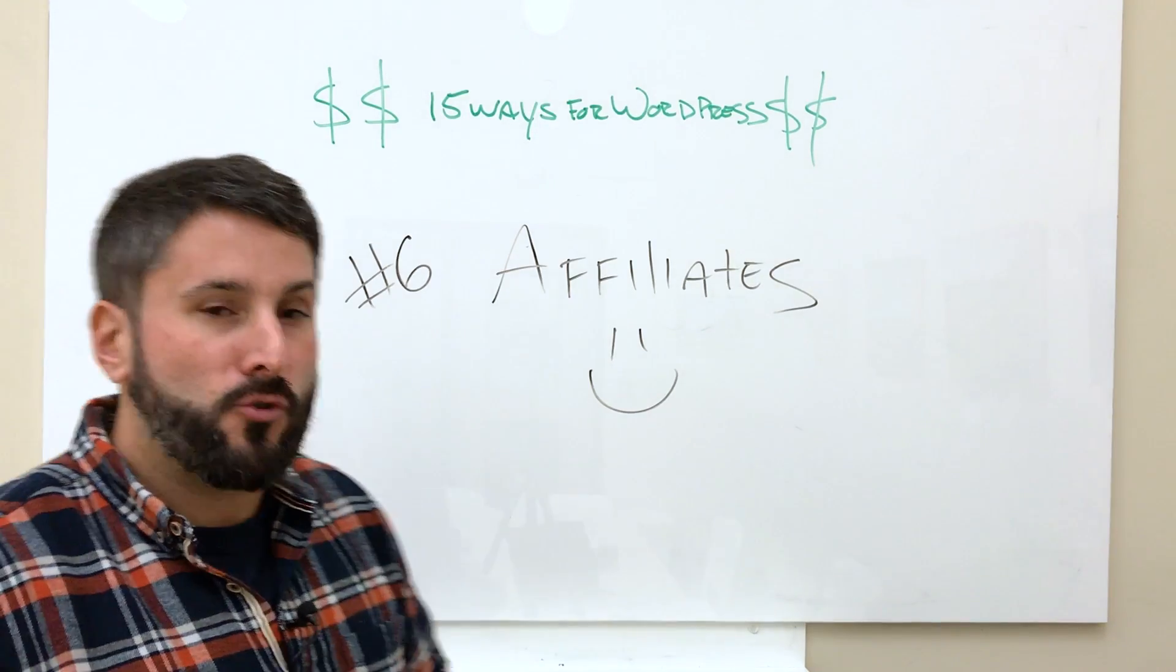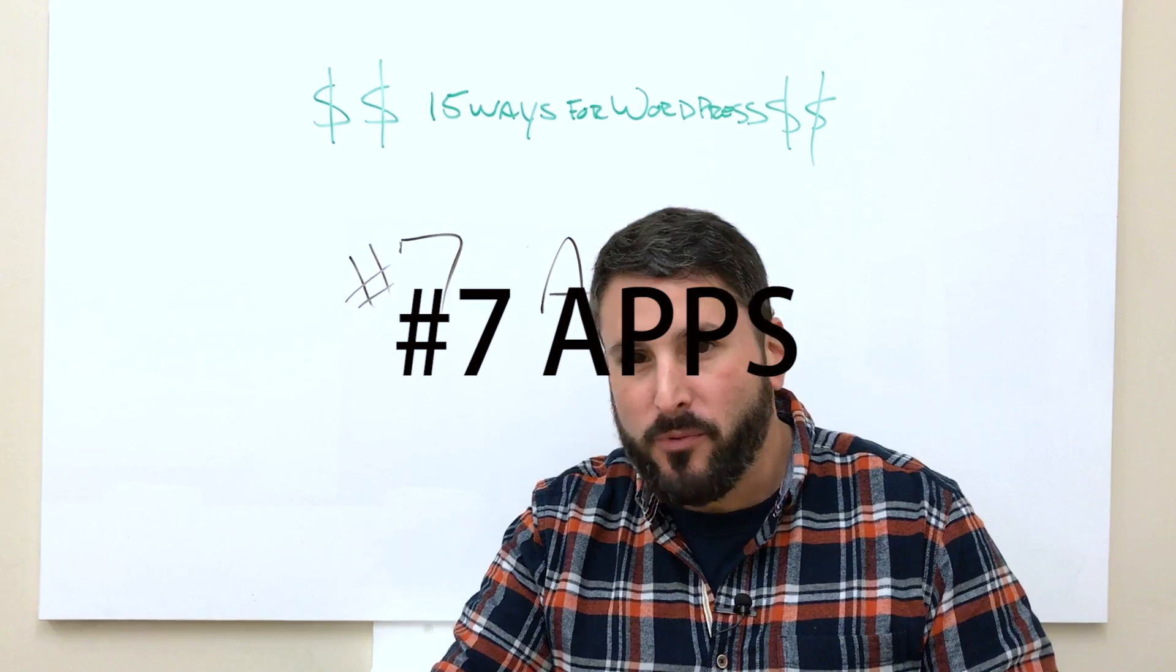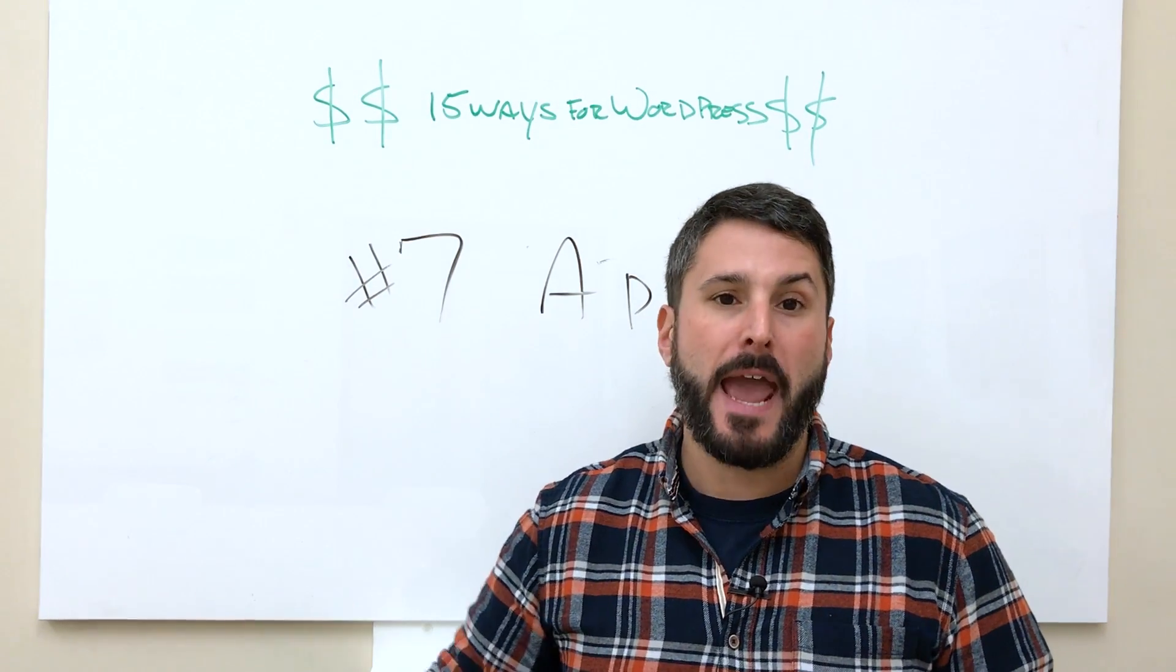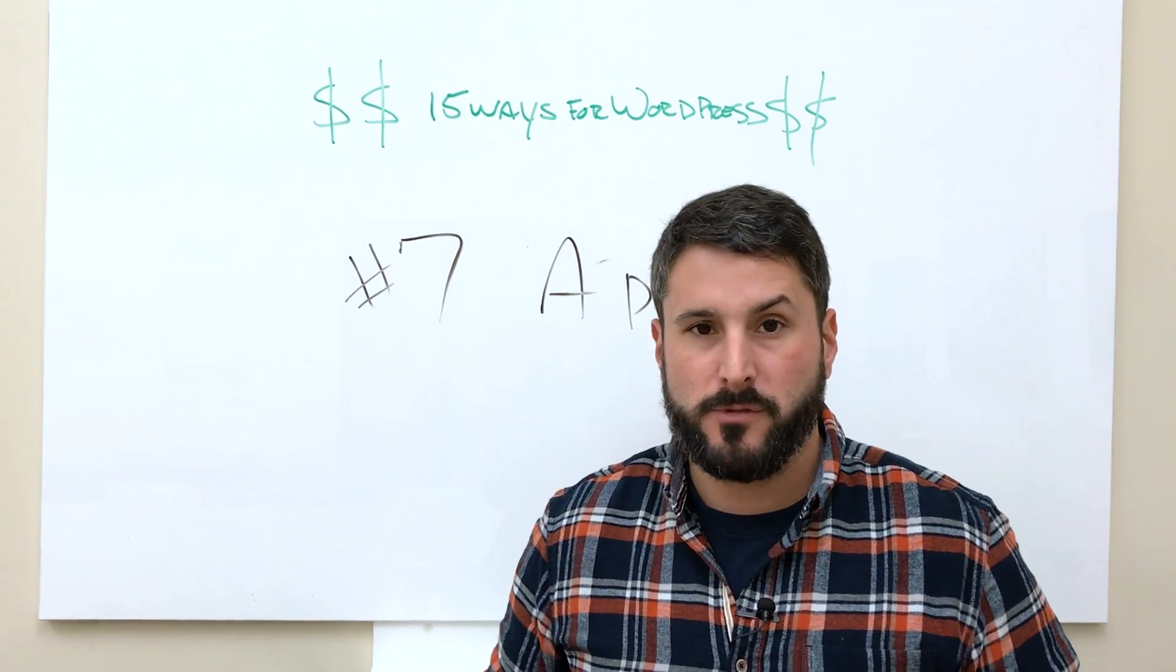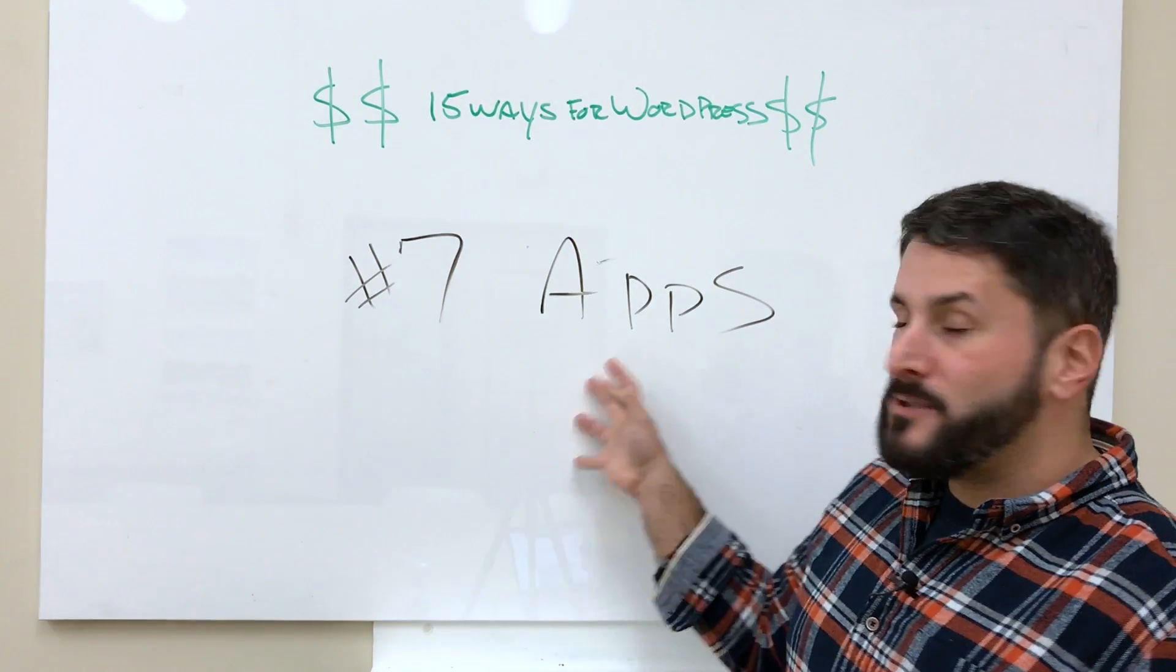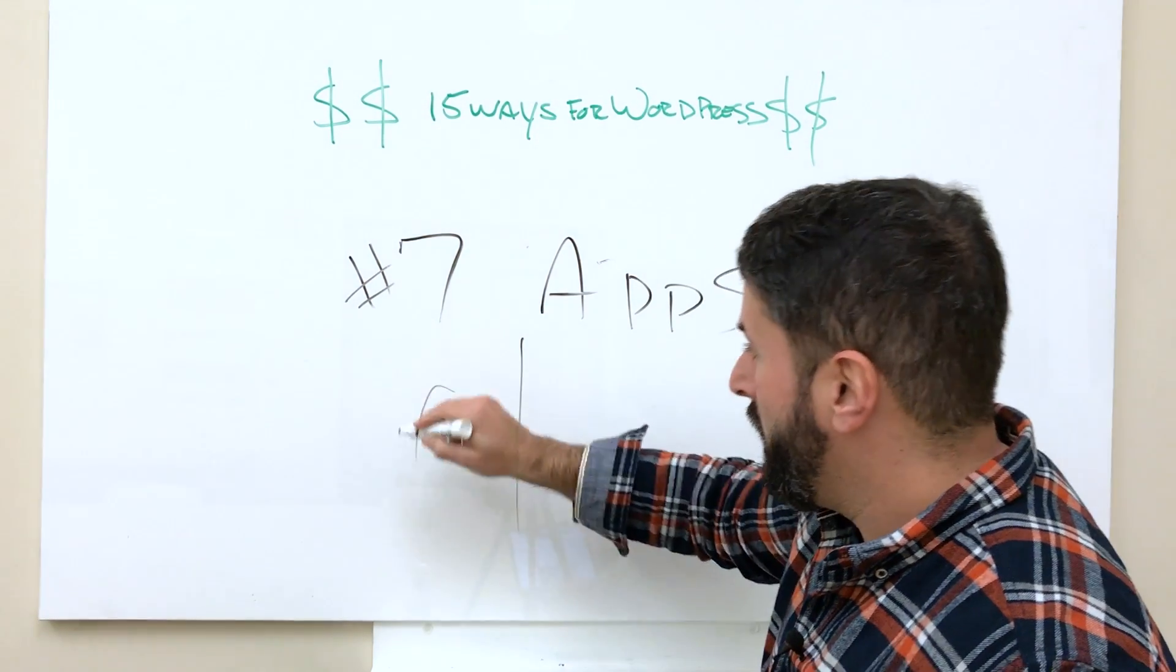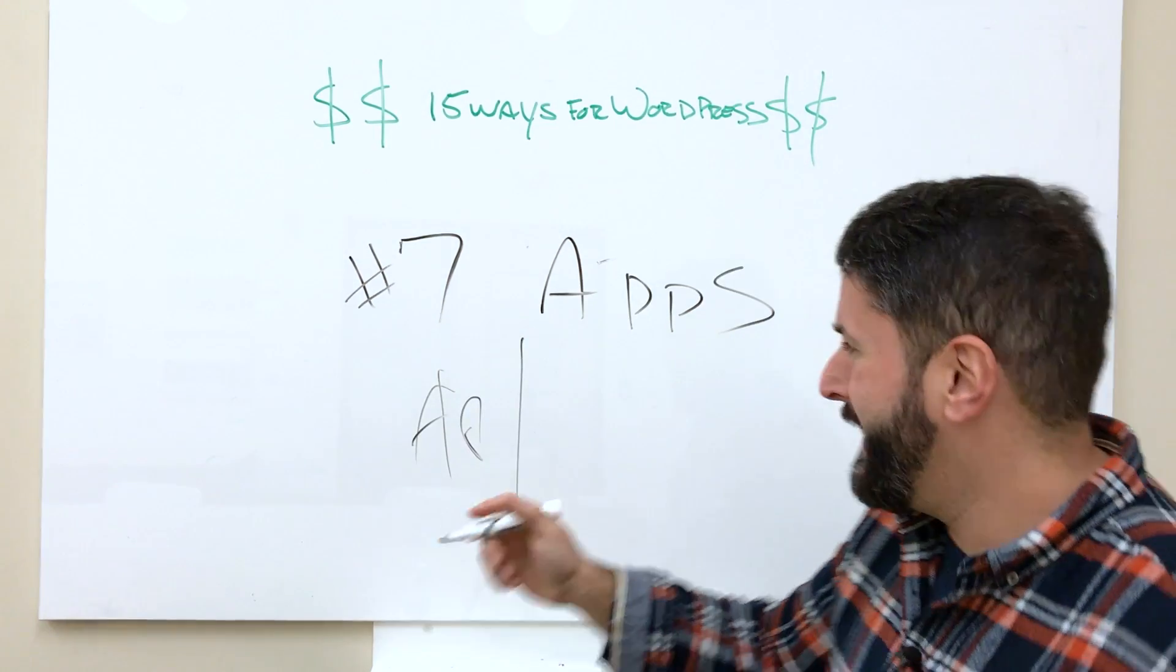Number seven, this time we're going to talk about apps, apps for WordPress. You can make money writing apps for WordPress, management apps for WordPress. Desk is the name of an app made by John Saddington, which is just a local app for WordPress. It allows you to draft and write your blog posts. You can also use a service like AppPressor, which actually allows you to build native apps with WordPress.